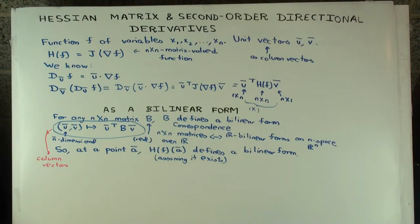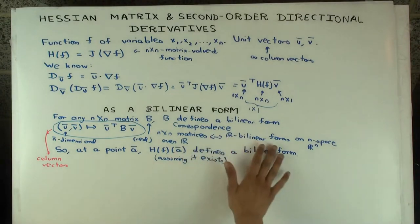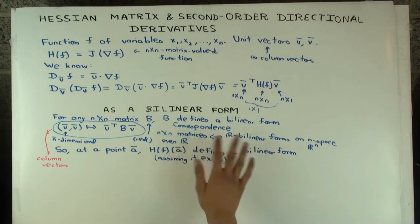And there's some subtlety, because there's some equivalences between bilinear forms. So there are some equivalence relations on bilinear forms which say they essentially describe similar things. But if you ignore that, this is just like on the nose, this is true.